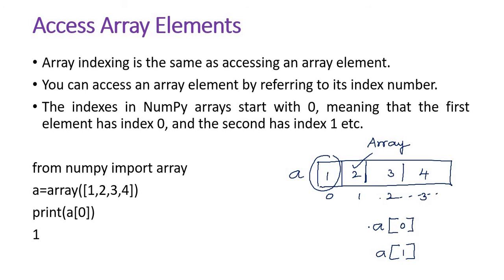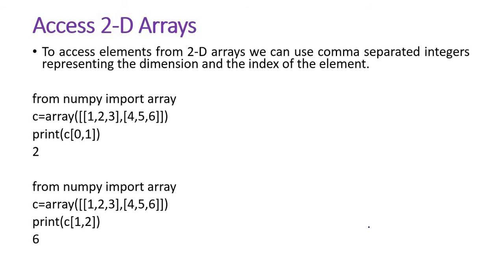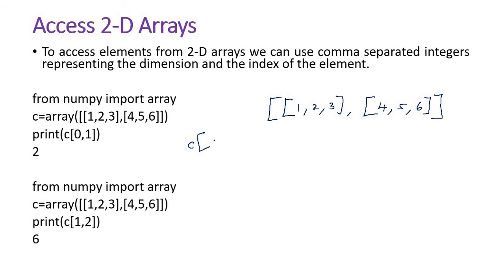So 1D arrays are no problem. What about 2D arrays — how do you access elements of 2D arrays? Here I created a 2D array: [[1, 2, 3], [4, 5, 6]]. Printing c[0][1]: in this 2D array there are two 1D arrays. The index of the first 1D array is 0, the second is 1. So 0 tells us we are accessing the first 1D array, and 1 means we access the element at index 1 in that array, which is 2.